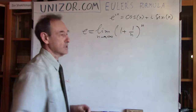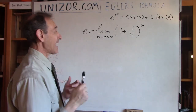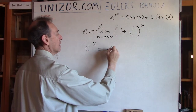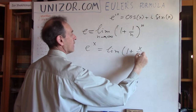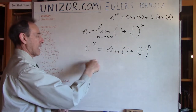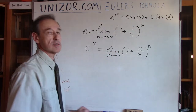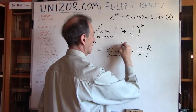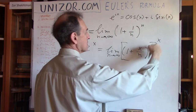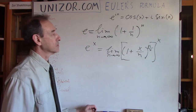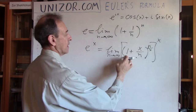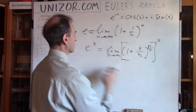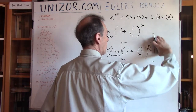We were also talking about the function a to the power of x, which has at point zero a certain steepness, and the steepness in the case where a equals E is exactly equal to one — so it's at 45 degrees, that particular tangential line. So if we start with E and this definition, I can continue: e to the power of x is equal to the limit of one plus x over n to the power of n. We have proved it in exactly the same lecture.